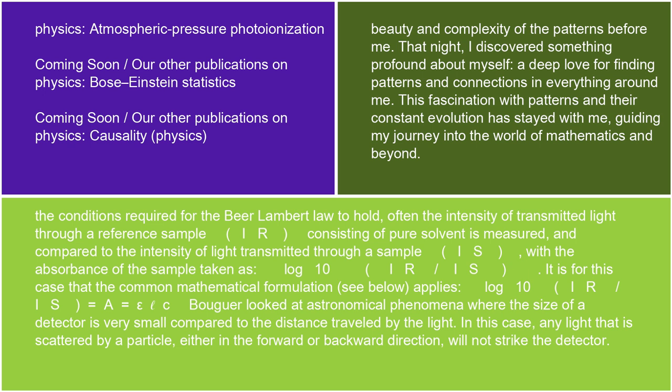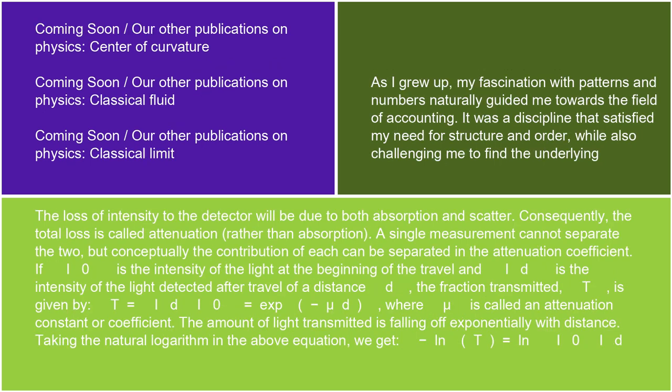Bouguer looked at astronomical phenomena where the size of a detector is very small compared to the distance traveled by the light. In this case, any light that is scattered by a particle, either in the forward or backward direction, will not strike the detector. The loss of intensity to the detector will be due to both absorption and scatter. Consequently, the total loss is called attenuation rather than absorption.